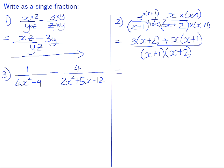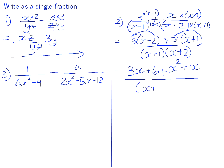We can now simplify that numerator by doing the distributive law in both cases. So 3 times x is 3x, 3 times 2 is positive 6. Positive x times x is positive x squared, and positive x times positive 1 is positive x. I'm not going to multiply out in the denominator.